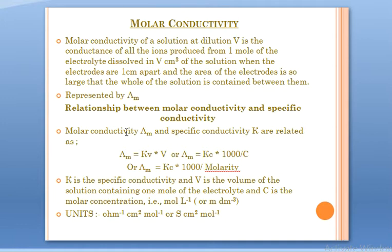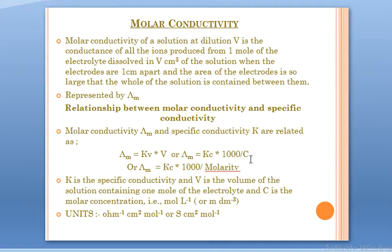Molar conductivity is represented by lambda with a subscript small m (λ_m). In order to know its mathematical equation, we use the relationship between molar conductivity and specific conductivity. The first formula, in terms of volume, is: λ_m = κ × V. In terms of solution concentration, λ_m = κ × (1000 / c), where c is the concentration of the solution.